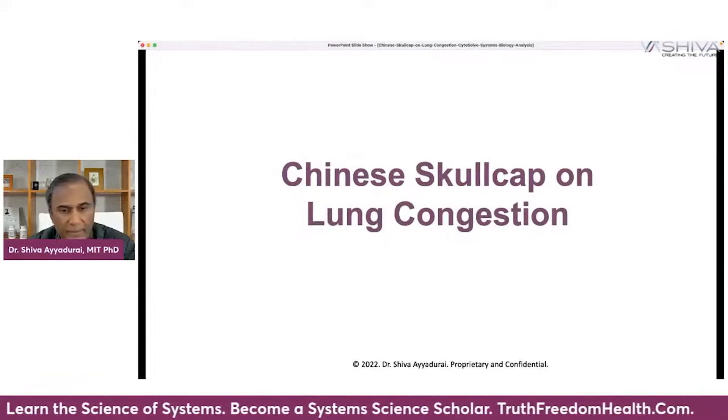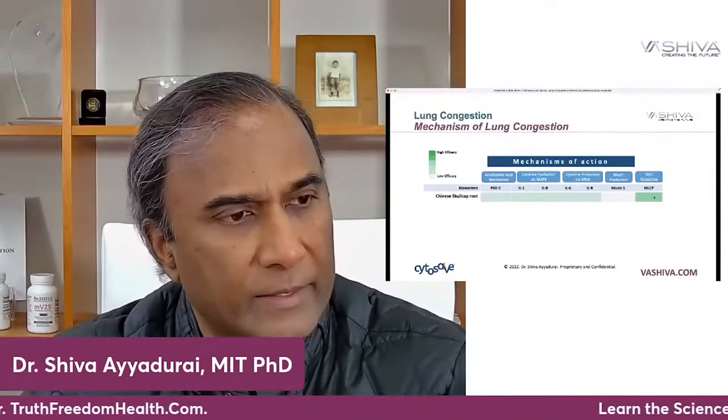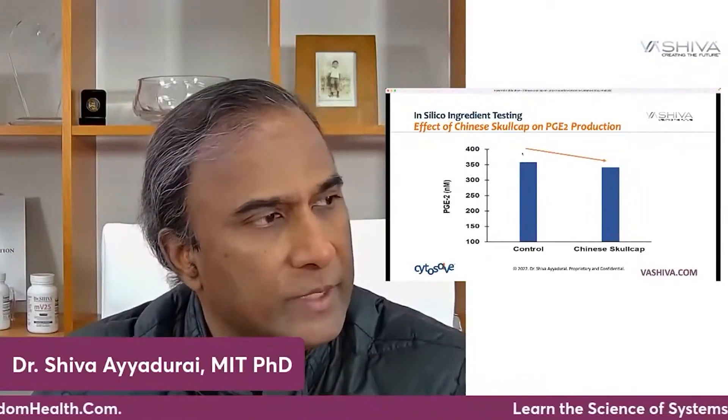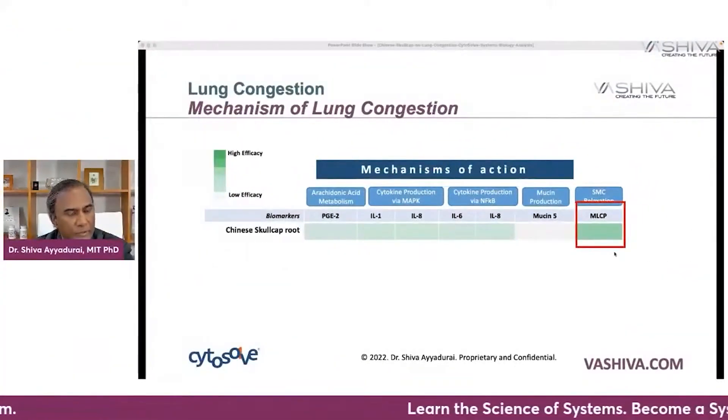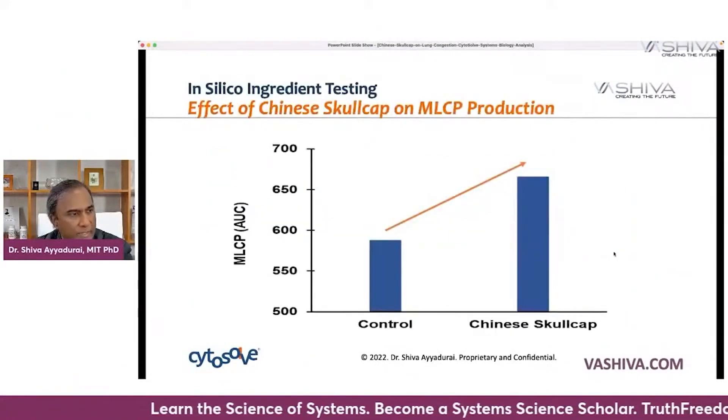Cytosol mapped all five molecular pathways and identified the key biomarkers. Chinese Skullcap down-regulates the first five biomarkers. It brings down PGE2 by almost 10 to 15%, which lowers inflammation. It lowers IL-1, IL-8, and IL-6. It has no effect on mucin-5, but for MLCP — the chemical that reduces contraction and increases smooth muscle relaxation — it goes up by almost 20%.